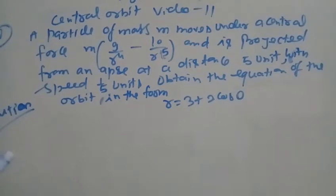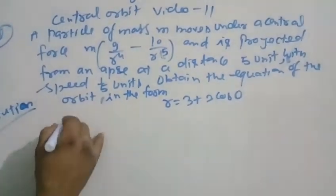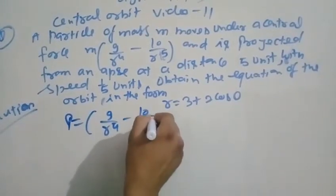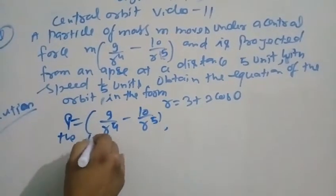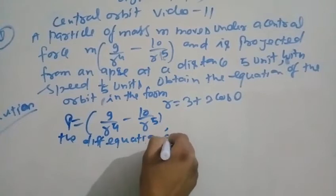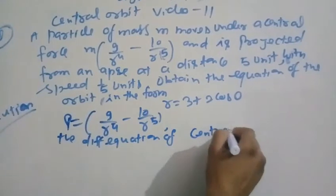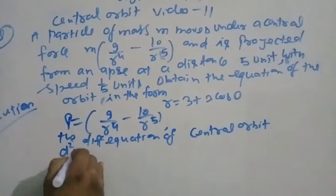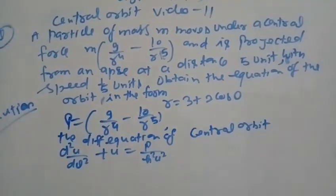Using the equation of central orbit. Given: the force P equal to M times (9/r⁴ minus 10/r⁵). The differential equation of the central orbit is: d²u/dθ² plus u equal to P divided by h² u².